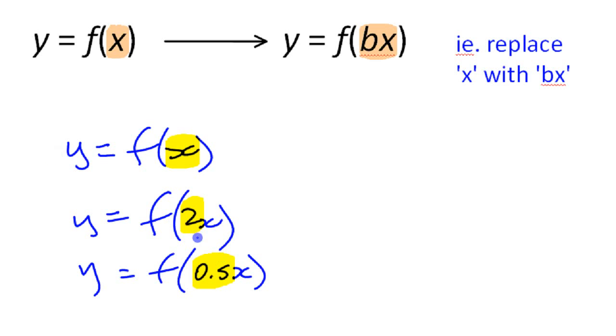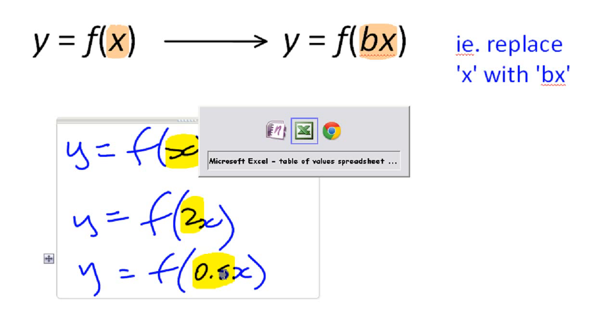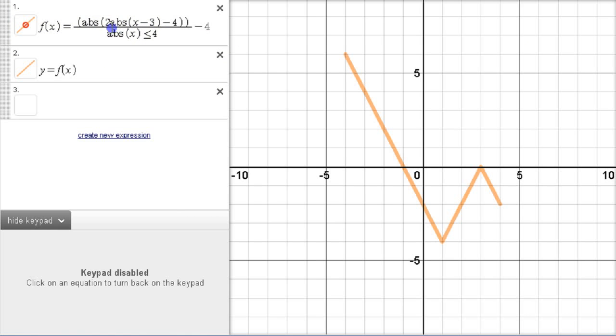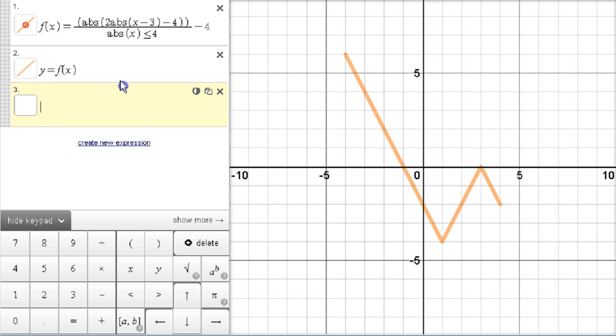Now, I am just picking 2 and 0.5 for convenience, but any number. So, if we look at the graph now, we are using this kind of wacky function here. But let's not worry about the equation, we are just going to call it f of x for simplicity. And now, if we want to write a transformed function, all we need to write is y equals f of...